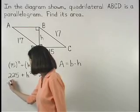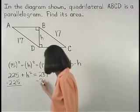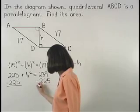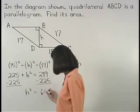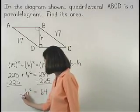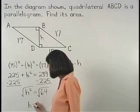Subtracting 225 from both sides gives us h squared equals 64. And square rooting both sides, we find that h equals 8.